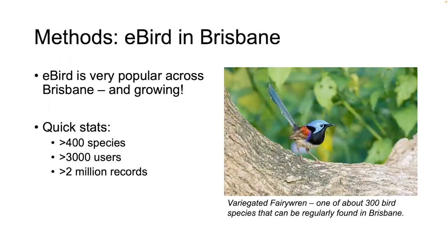I undertook three main studies to determine the nature and impact of biases in citizen science data. First, I devised a method of quantifying spatial and temporal biases in a repeatable way and applied this to the eBird dataset within Brisbane. Second, I simulated biased data and tested the effects on simple models. Third, I combined the first two components to test real-world biases in the eBird dataset on models applied to the same data. The Brisbane eBird dataset has more than 400 bird species recorded by more than 3,000 unique users across more than 2 million individual bird occurrence records. My methods are transferable to just about any other similarly structured dataset.